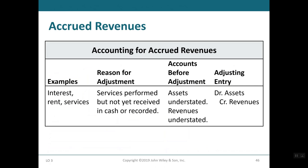Summary of accrued revenue: reasons for adjustment include services performed but not yet received in cash or recorded. Before adjustment, assets are understated and revenue is understated. The correcting adjusting entry is: debit assets (Accounts Receivable) and credit revenue.